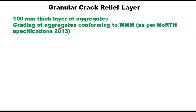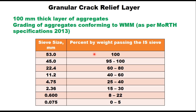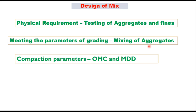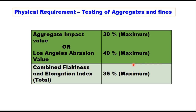The granular crack relief layer is generally a 100 mm thick layer of aggregates, and the grading should conform to wet mix macadam (WMM) as per MRTH specification 2013. The attempt should be to have the final grading close to the midpoint of the specified range. The design of mix is a three-step process: physical requirement testing of aggregate and fines, meeting grading parameters by mixing available aggregates, and determining compaction parameters — optimum moisture content and maximum dry density.